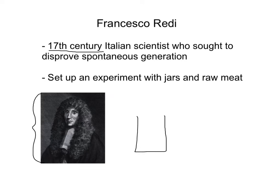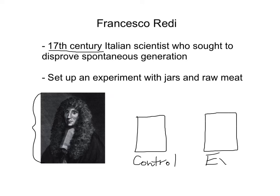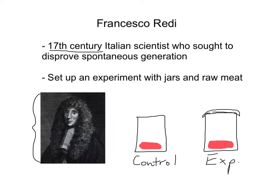He has his jars here — here's the control and here's the experimental group. The raw meat is placed in each jar. To vary the control and the experimental, he covered one of them and left the other open. The experimental jar is supposed to be different from the natural scenario. The natural scenario people were used to seeing was: if you leave raw meat out, flies are born from it.